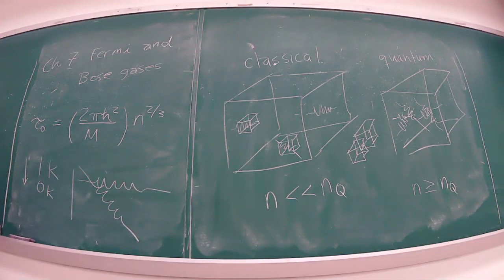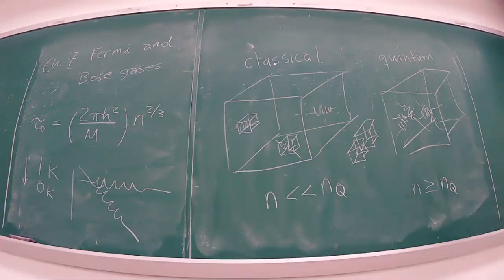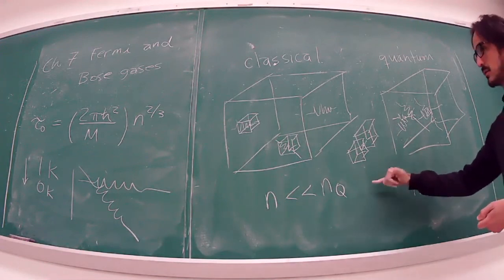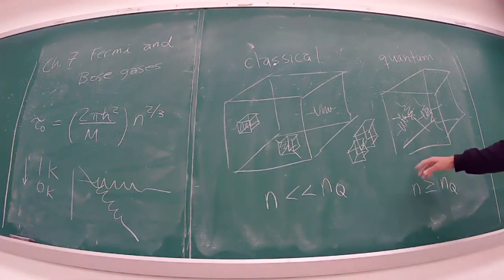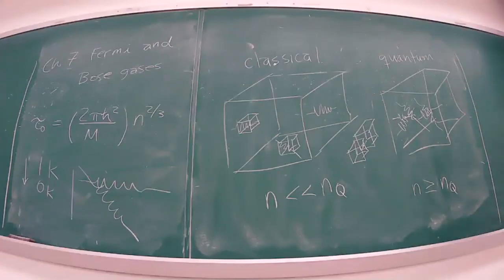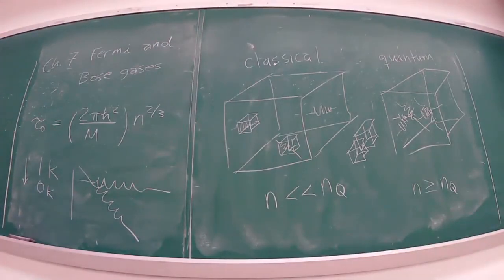When a Fermi gas or Bose gas is in the quantum state, it is called a degenerate gas. Note that 'degenerate' here differs from earlier in the semester when it meant having more than one state for a particular energy — here it means the system is in its quantum regime, very close to its ground state. We'll analyze metals and white dwarves as cool example cases.